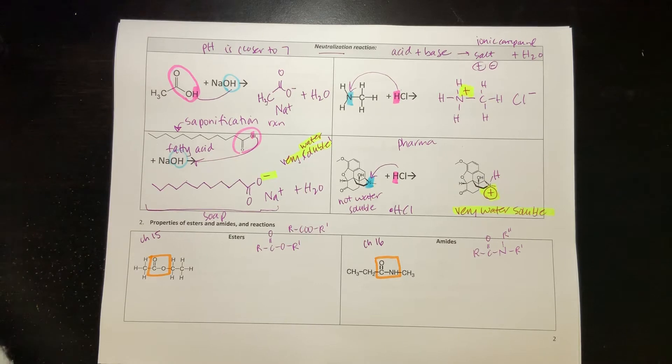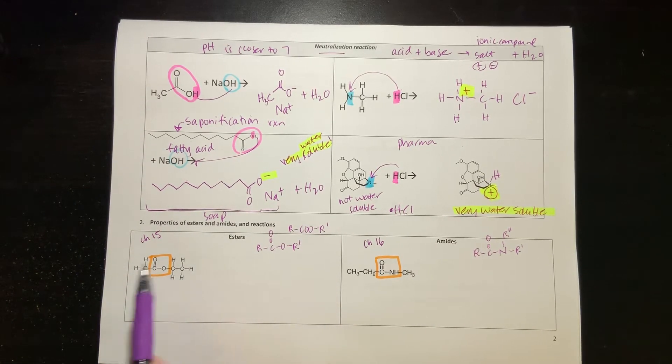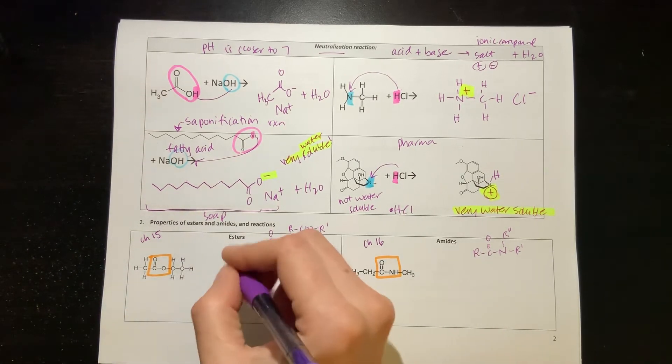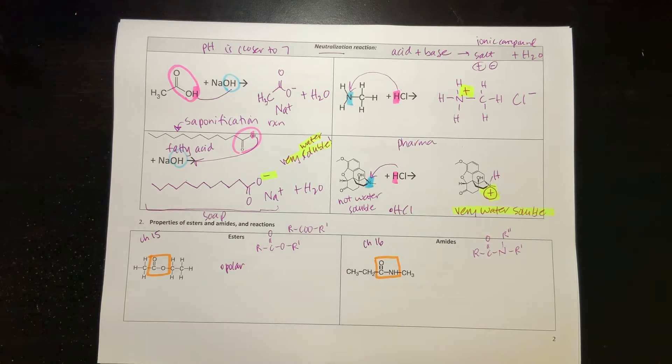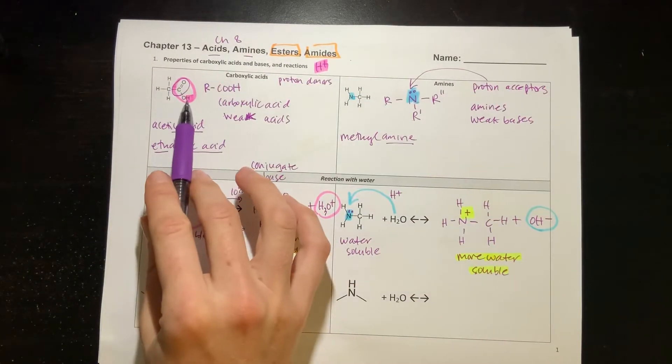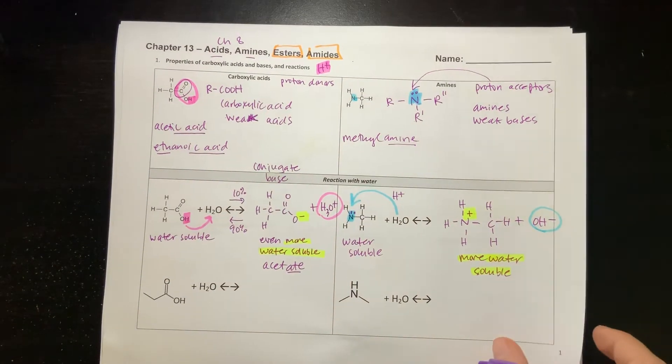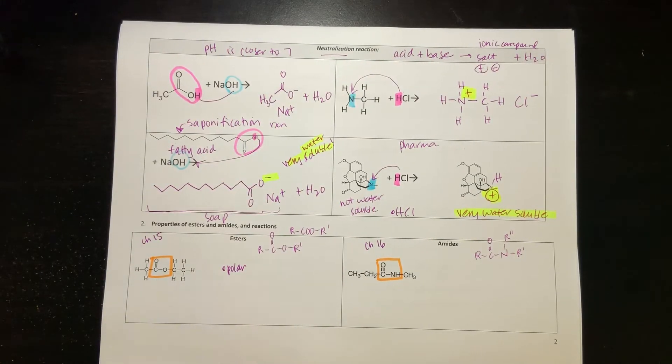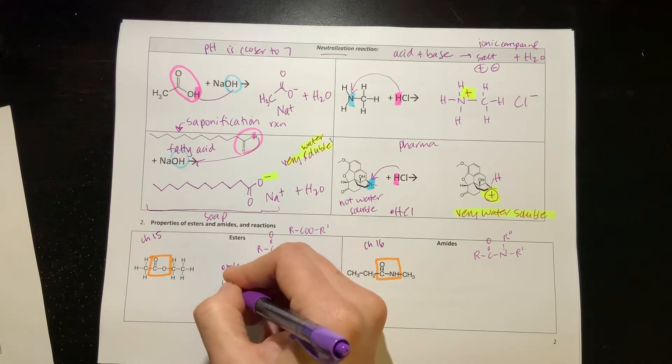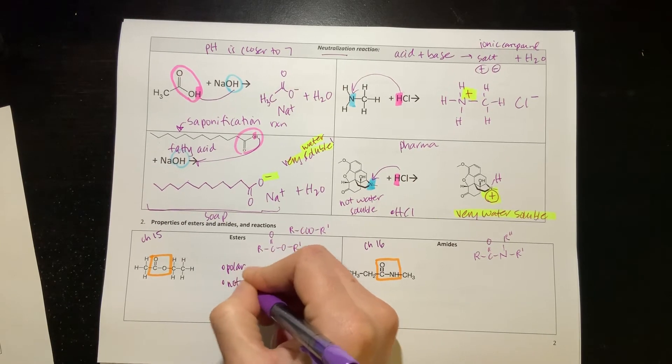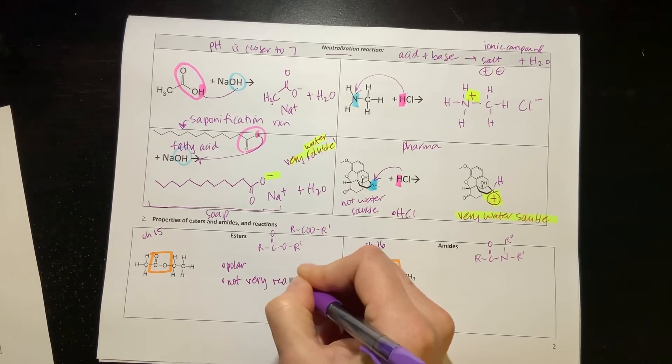When I look at an ester, especially a small one like this, I would say that it is somewhat polar but not quite as polar as a carboxylic acid. If I look back to the carboxylic acids, they have that OH which enables them to participate in hydrogen bonding with each other. An ester has some oxygens but not that OH bond, so polar but not as polar. This is going to be not very reactive, although we'll see one important type of reaction.